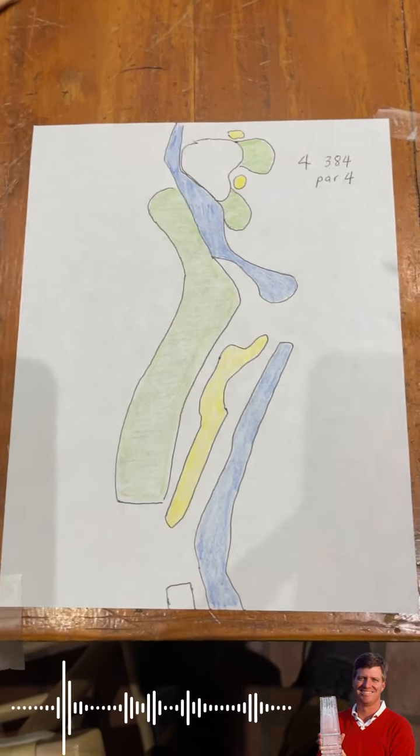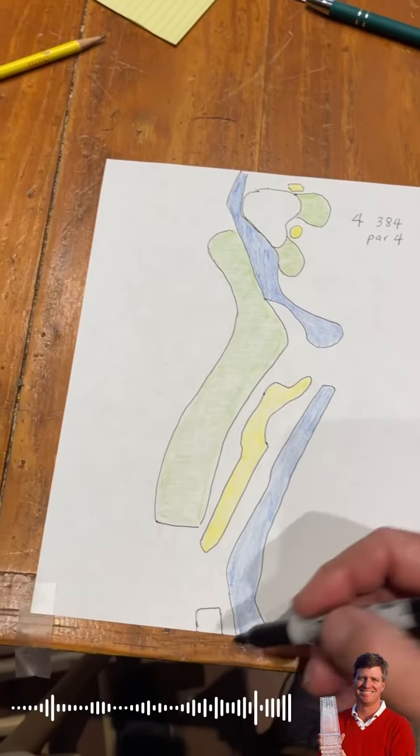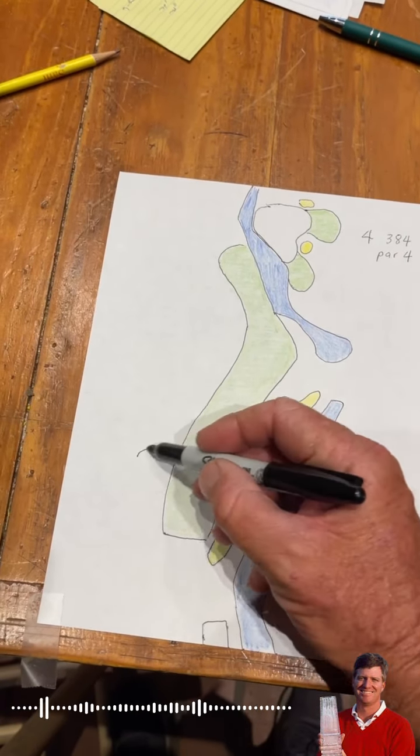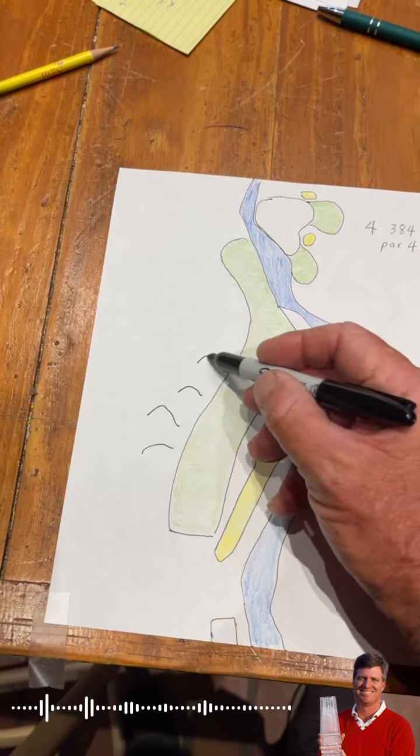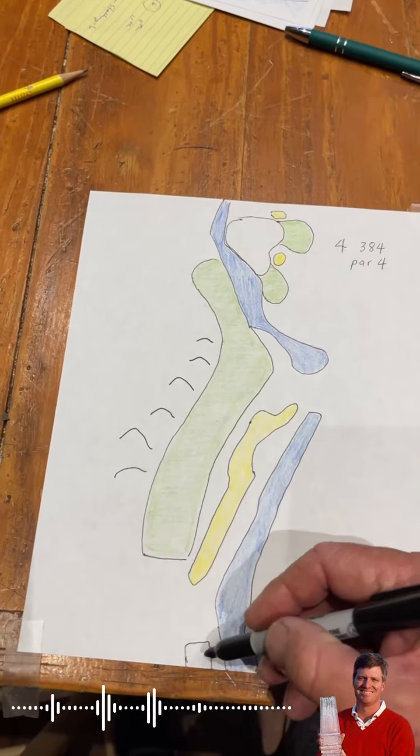Hole number four, 384 yards. Again, look what's going on here - bunkers all the way down the right. These are all little hills, hills over here, and the rough this week is very deep. So again, if you look as a crow flies...